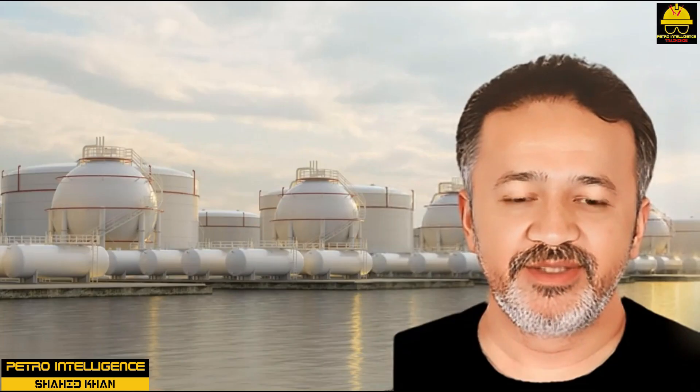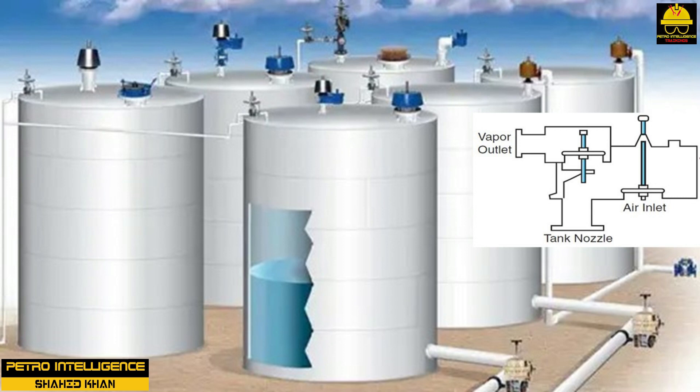Fixed-roof tanks that store volatile fluids are often equipped with a conservation vent. A typical conservation vent is equipped with two valves having weighted discs to regulate pressure during operation. The exhaust valve will not open until a slight positive pressure is reached in the tank, and the intake valve will not open until the tank is under a slight vacuum. Controlling the pressure in the tank reduces loss of vapors.